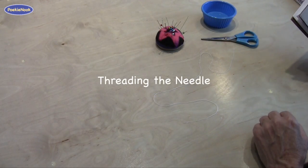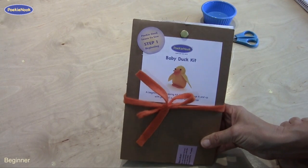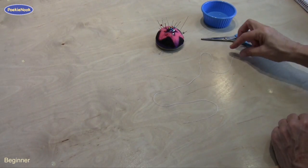We use several types of threads and needles for the different Pookie kits. For the beginning kit, we use a thicker thread and a thicker needle with a big hole.